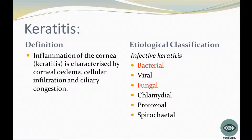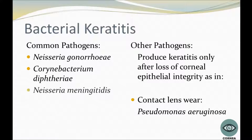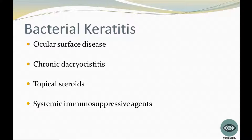About the etiological classification of infective keratitis, those are bacterial, viral, and fungal. The most common pathogens are Neisseria gonorrhoeae, Corynebacterium diphtheriae, and Neisseria meningitidis. Other pathogens can produce keratitis only after loss of corneal epithelial integrity. Regarding contact lens wear, Pseudomonas aeruginosa can also cause keratitis. Other causes include ocular surface disease, chronic keratitis, topical corticosteroids, and systemic immunosuppressive agents.